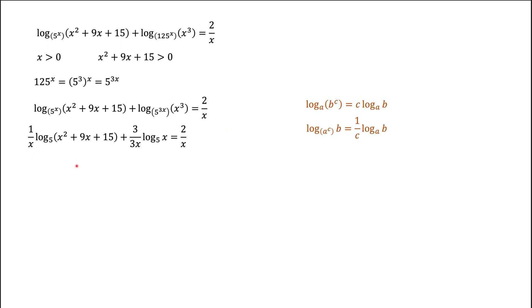Using both rules, we get a new expression. The 1 over x came out because x was in the base of the logarithm, and 3x came out because there was 3x in the base. The 3 also came out because we had x cubed and used the formula to pull it out. Now those 3s cancel, and each term has 1 over x, so we can multiply both sides of the equation by x to cancel it out.